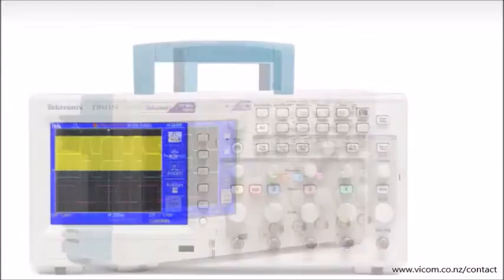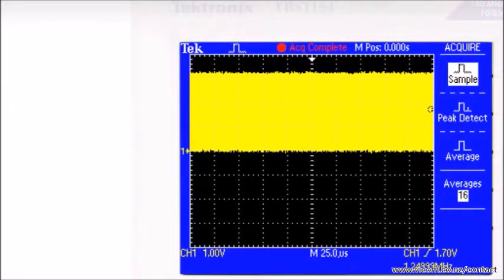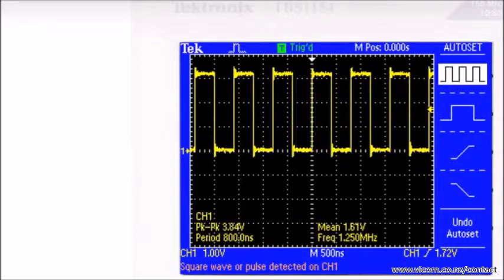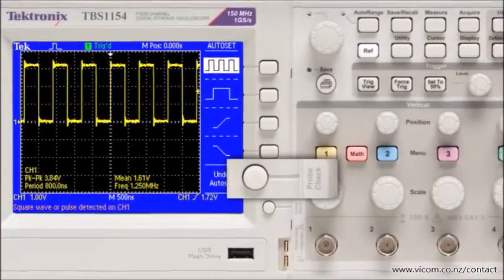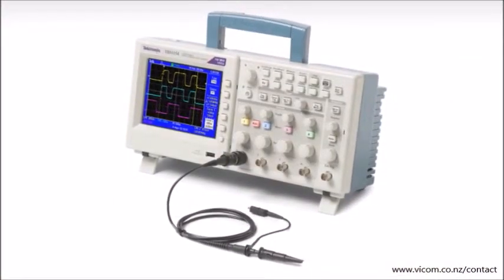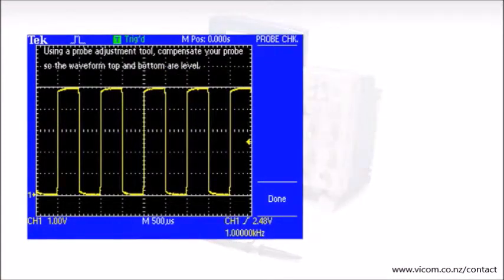Smart AutoSet brings up a usable waveform display so you can quickly get down to measuring and debugging. Pressing the unique probe check button runs an automated check that your probe attenuation factor is correct, calibrated, and operating properly.